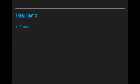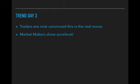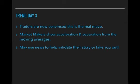On day three, traders are now convinced this is the real move. They've seen this thing drop or rise for three days straight and they're getting in. The market makers will show acceleration and separation from the moving averages, and make big spikes and aggressive moves to induce people to go the wrong way — inducing buyers to go long and sellers to go short — with big fast moves. They'll also use the news to validate their story or fake you out.